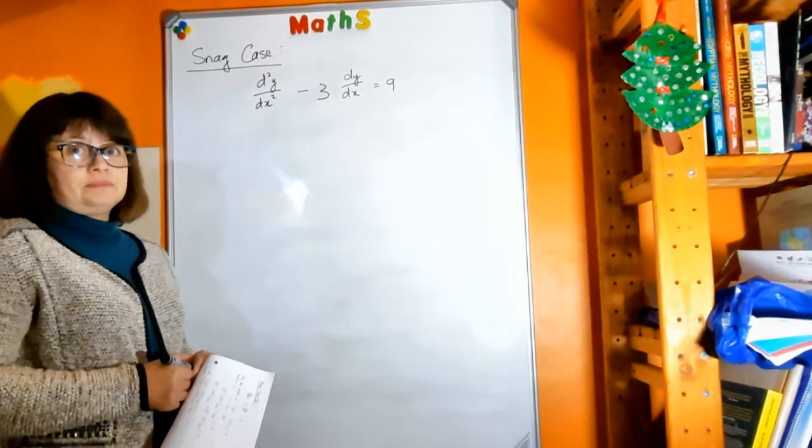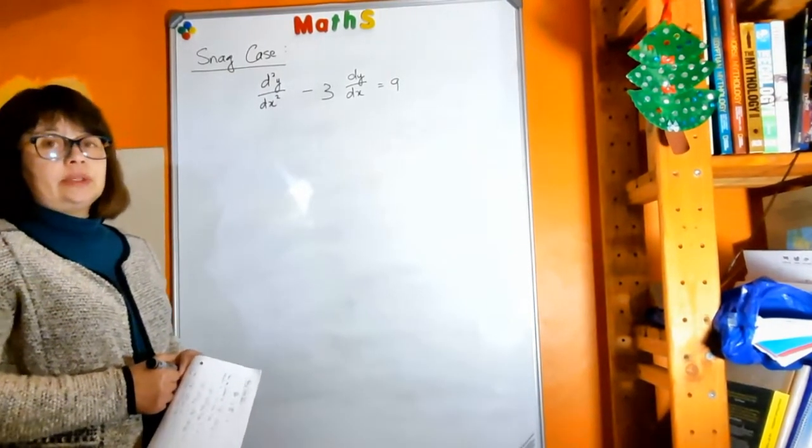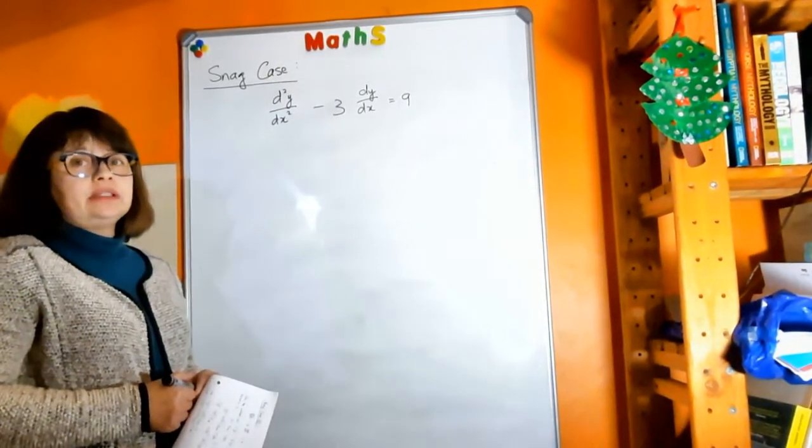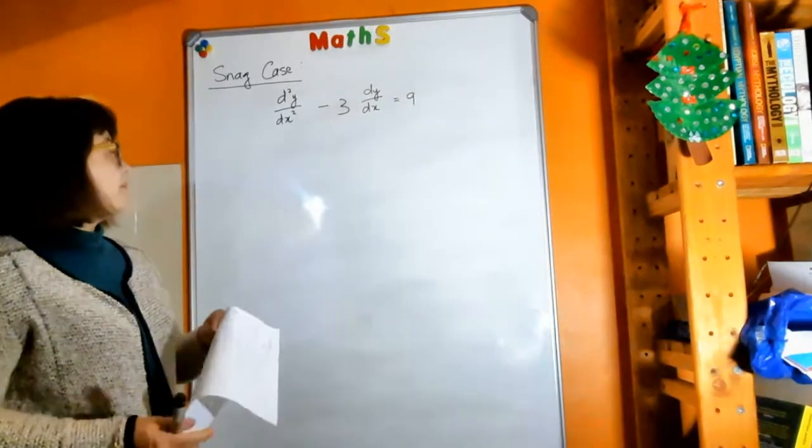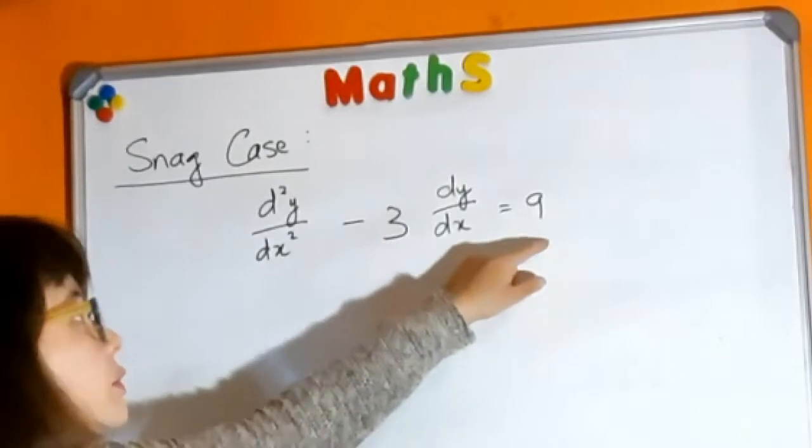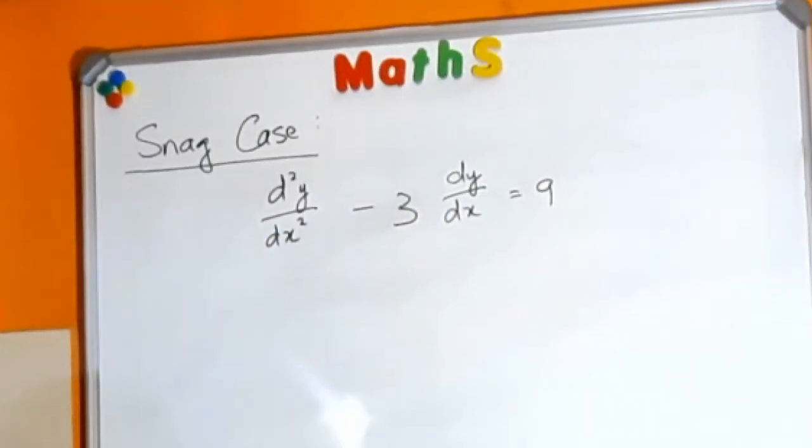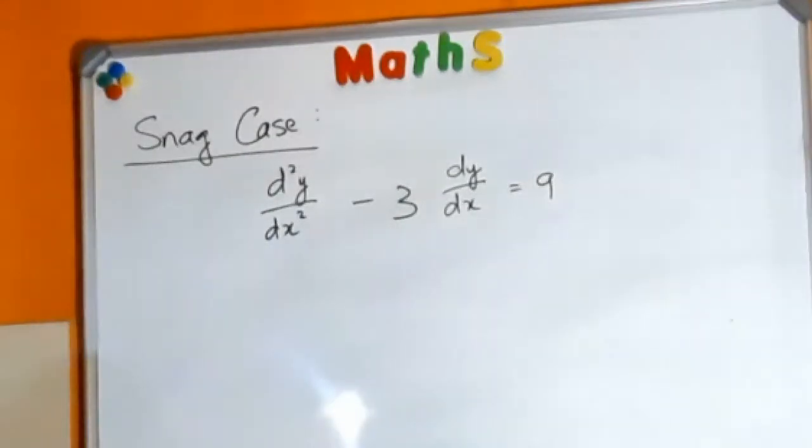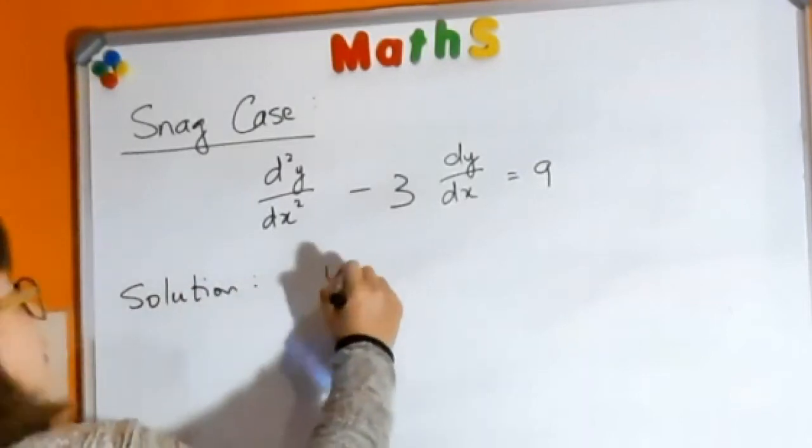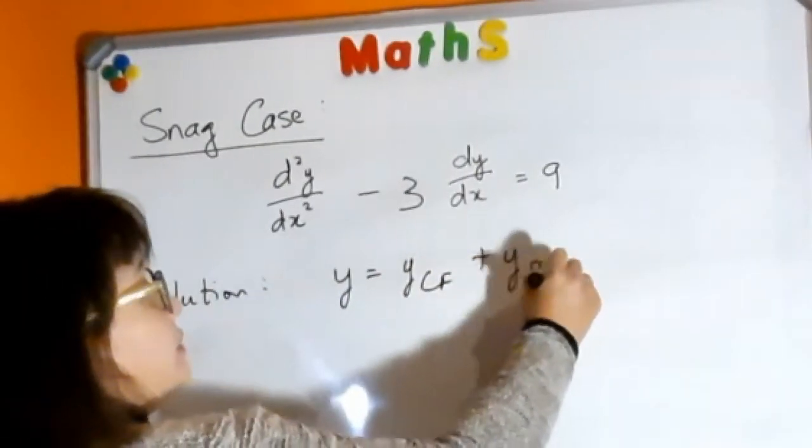Let's look at a snag case. We're looking at a second-order differential equation where the dependent variable is y and your independent variable is x. You have a non-homogeneous or forced system differential equation because it equals 9. So your solution is going to be made up of two parts: your complementary function as well as your particular integral.